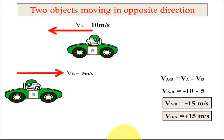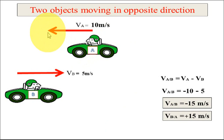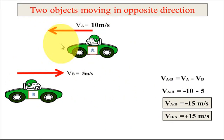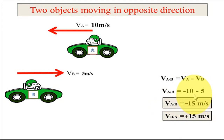Now consider the same example but with the two vehicles moving in opposite directions. Vehicle A is now moving towards the negative x-axis (speed still 10 m/s) and vehicle B is moving towards the positive x-axis at 5 m/s. The relative velocity of A with respect to B is va minus vb, where va is minus 10, giving minus 15 meters per second. Similarly, the relative velocity of B with respect to A is plus 15 meters per second.